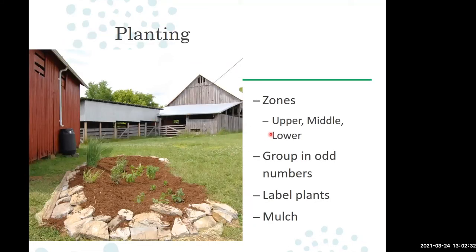Now that the garden is constructed, we can think about planting zones. There are different terms, but I refer to them as the lower, middle, and upper sections. The lower area will be wet, the middle area will get occasionally soaked but dry out a bit more, and the upper areas will get water but typically never be fully submerged.